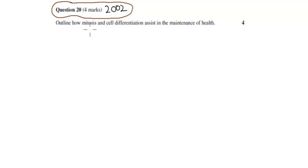First I'll actually read the question. It says, outline how mitosis and cell differentiation assist in the maintenance of health, and that's worth 4 marks. So when you're ready, pause the video and attempt the question.